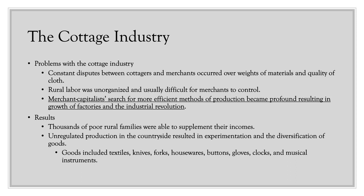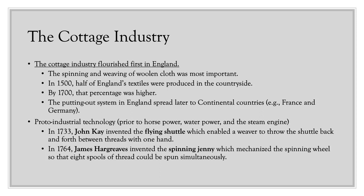The results of the cottage industry include thousands of poor rural families being able to supplement their income. Also, unregulated production in the countryside resulted in experimentation and diversification of goods, which would eventually lead to the Industrial Revolution. Goods included textiles, knives, forks, housewares, buttons, gloves, clocks, and musical instruments. The cottage industry flourished first in England, most commonly associated with the spinning and weaving of woolen cloth. In 1500, half of England's textiles were produced in the countryside, and by 1700 that percentage was higher. The putting-out system later spread to continental countries such as France and Germany, but never as prolific as in England.